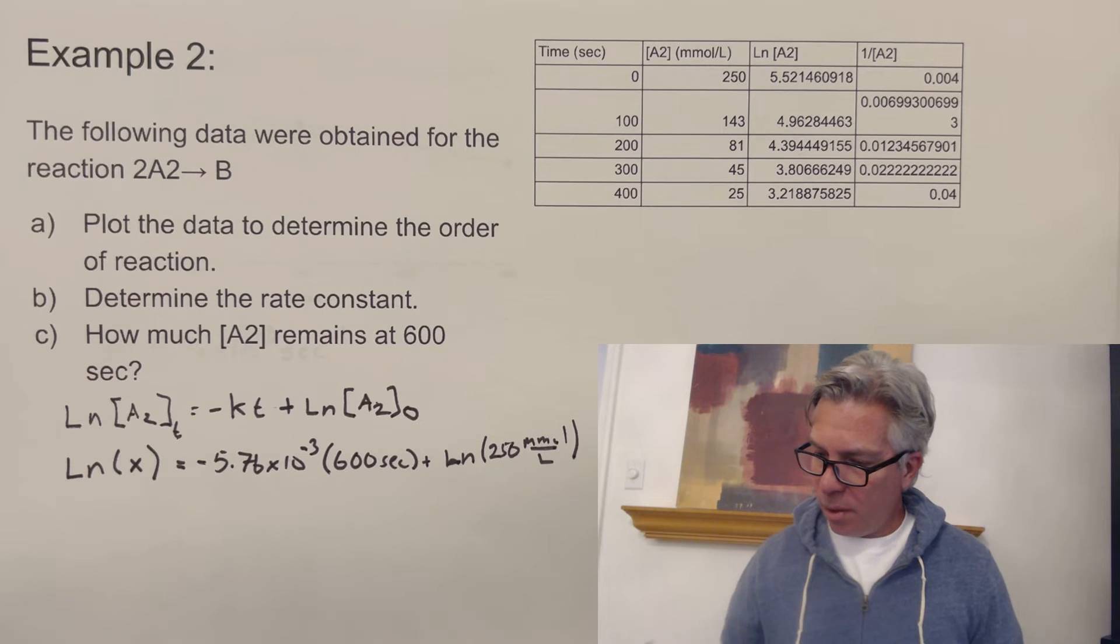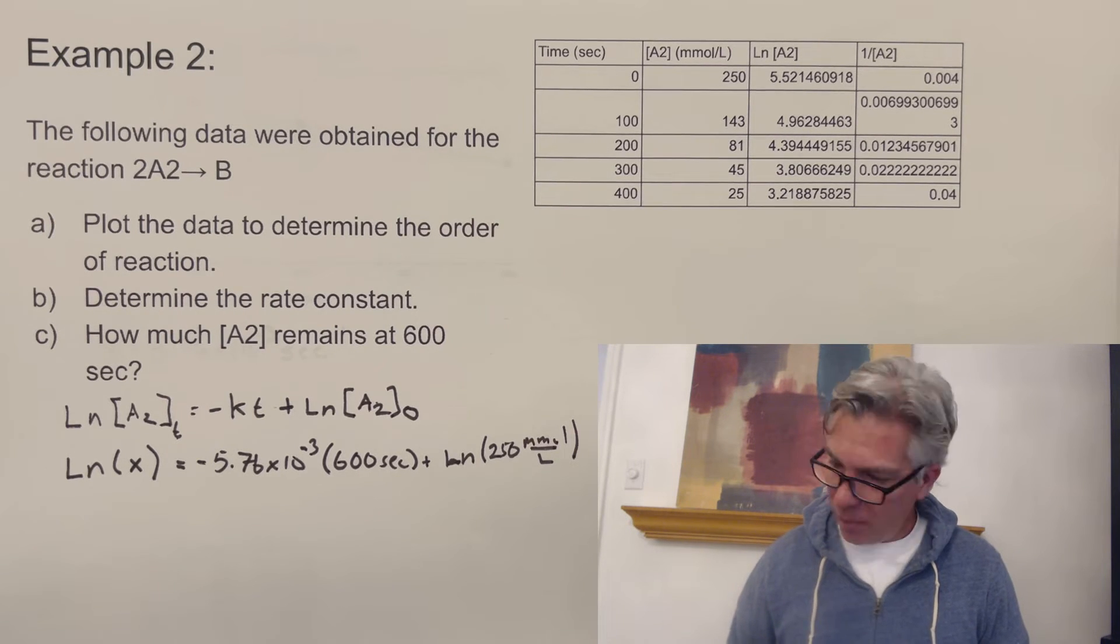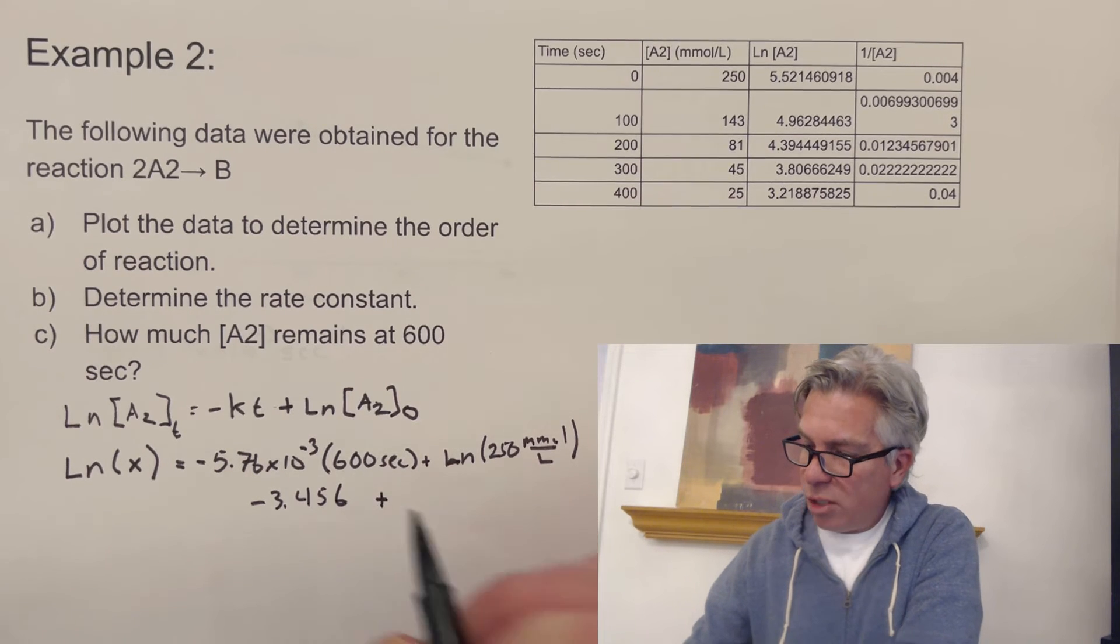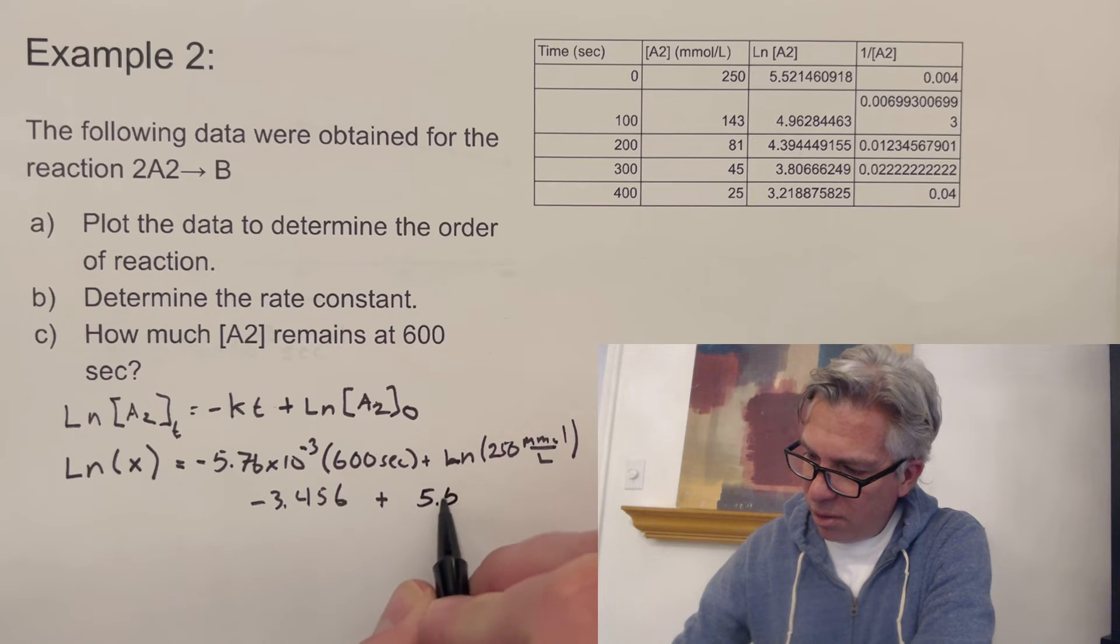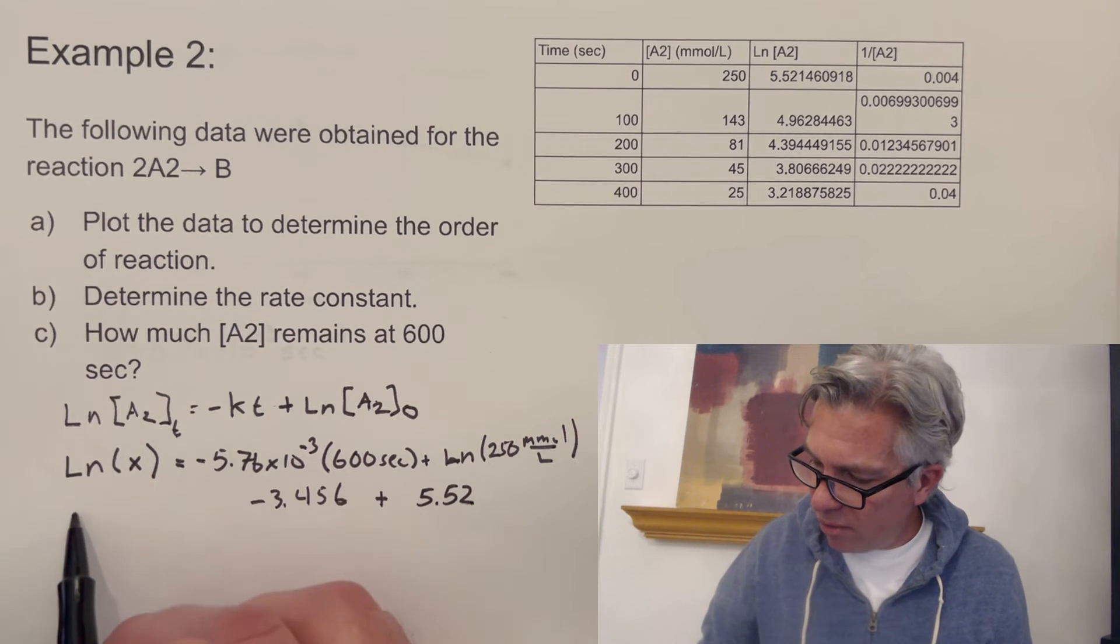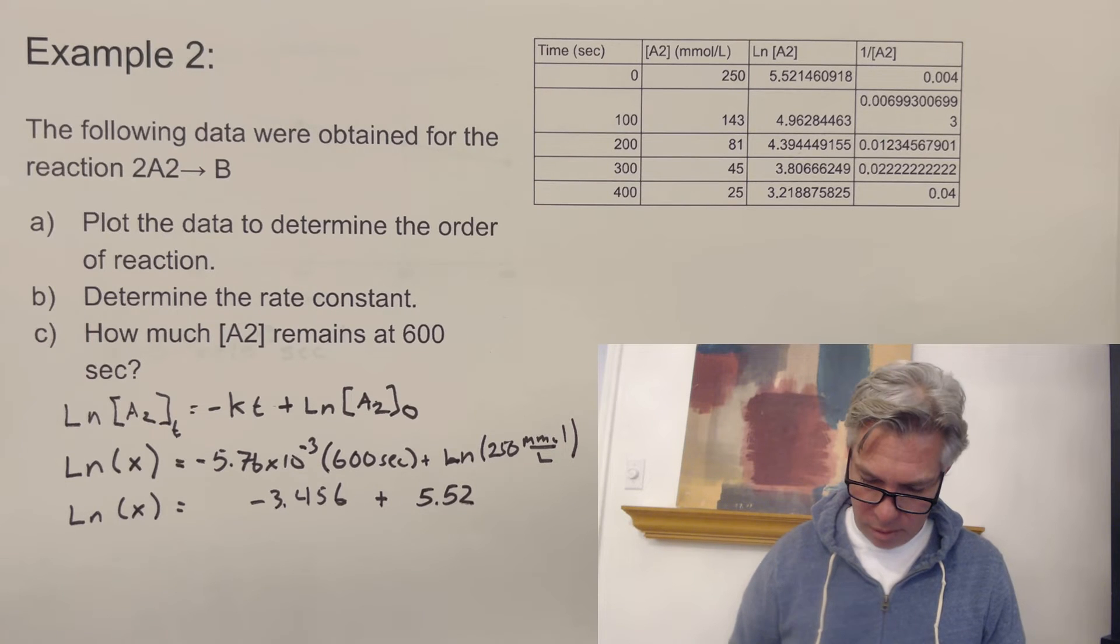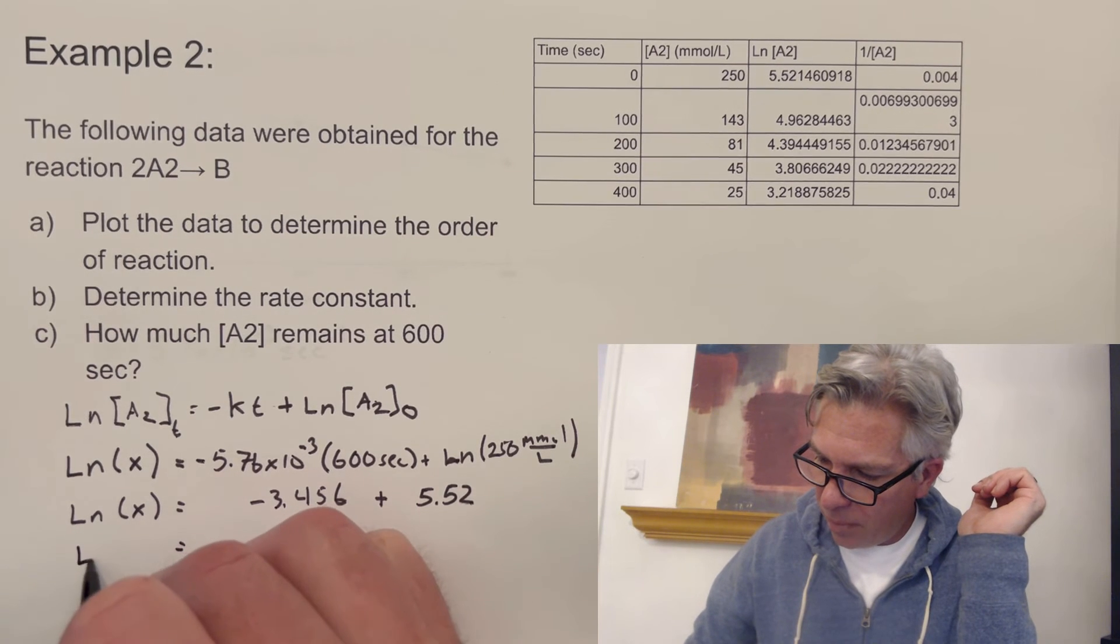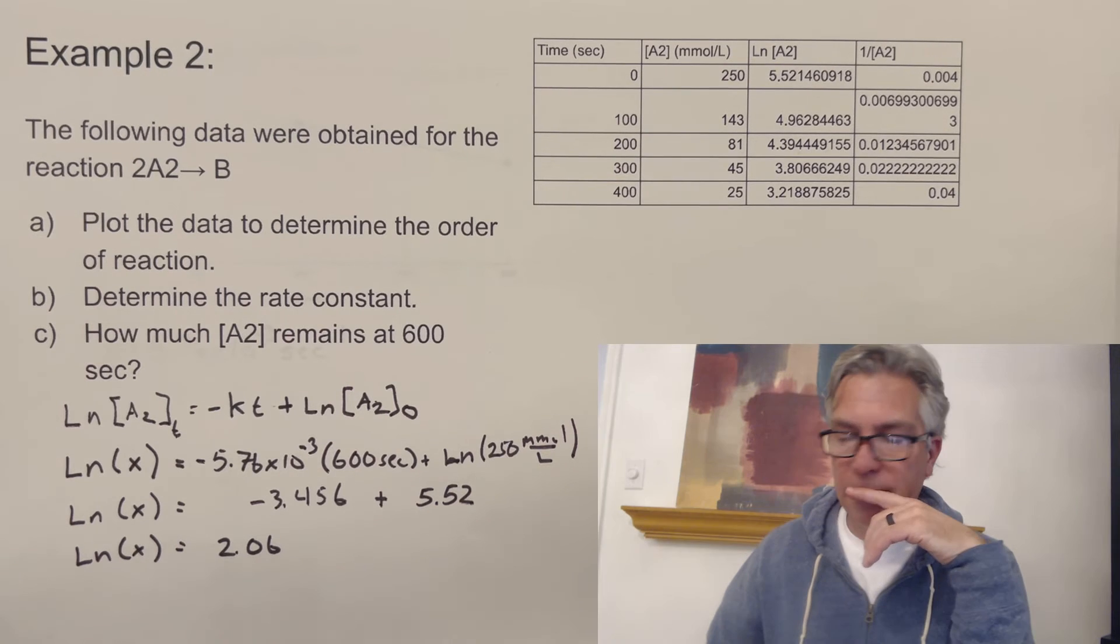So real quick, I'm just going to show these steps 5.76 times 10 to the minus third times 600. And we're going to make that negative. So I got a negative 3.456. And then the natural log of 250 is 5.52. So I'm a negative 3.456. And all of this is equal to the natural log of X. And then I'm going to add these two numbers up to get them together. So negative 3.456 plus 5.52. And I get natural log of X equals 2.06. I'm just going to leave it at 06 because I only had two decimal places.